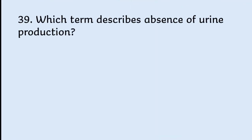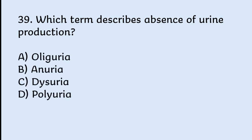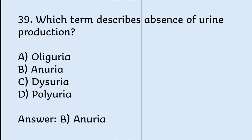Which term describes absence of urine production? Options: oliguria, anuria, dysuria, polyuria. Correct answer is anuria.